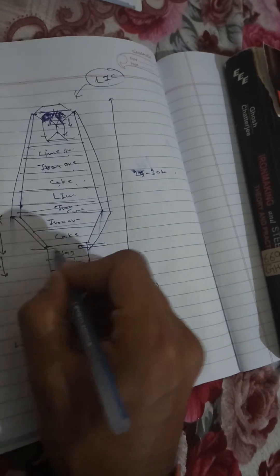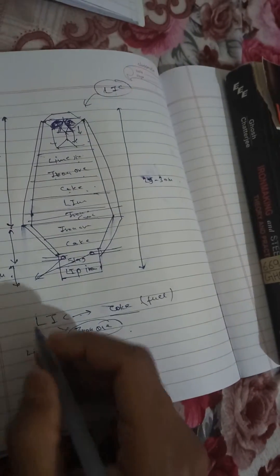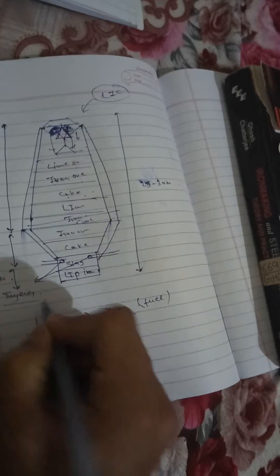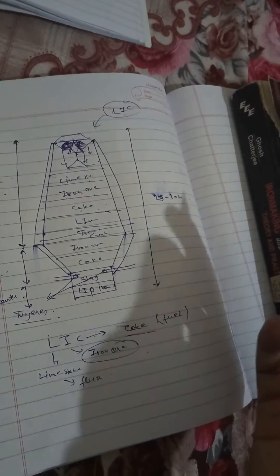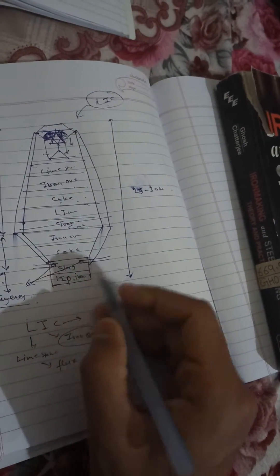To separate slag from liquid iron, we use the Tuerus. These are called Tuerus. The main use of Tuerus is to separate out slag from the pig iron, this liquid pig iron.